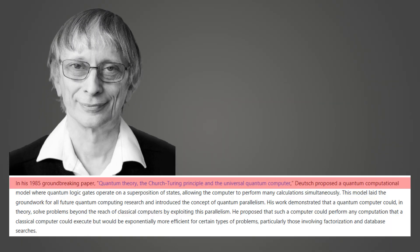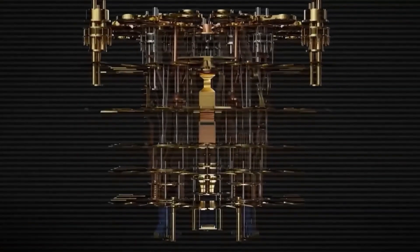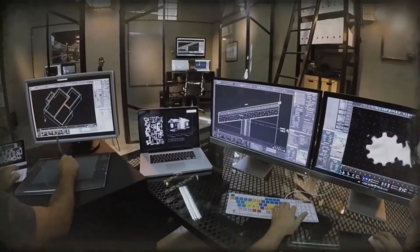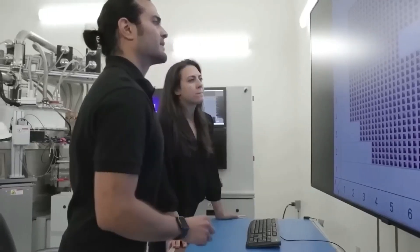The breakthrough came in 1985 when Deutsch published his seminal paper describing the universal quantum computer. But this wasn't just a technical achievement. Deutsch realized that to understand how quantum computers could work, you had to accept that multiple versions of the computer exist simultaneously across parallel universes, each processing different aspects of the same calculation.